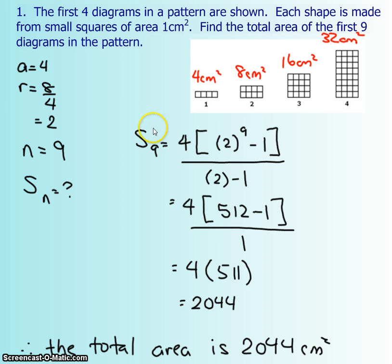You're going to take these three values and put them into the formula. So the sum of the first nine terms is going to be your a times r to the power of n minus one, all over r minus one. Now what you're going to do is just solve using BEDMAS. Exponents first, and that's how you get the 512. Then you're going to do brackets before you multiply. Okay, so I get 511 times 4 is 2044.